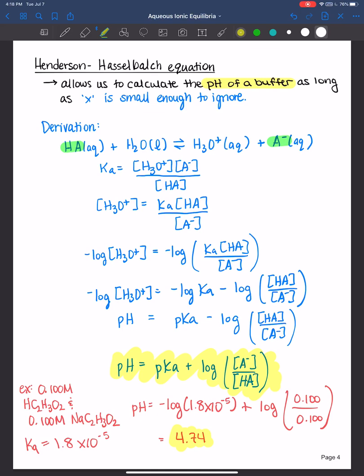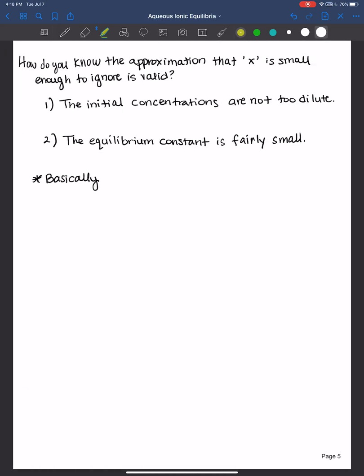I got some tricks for you to kind of quickly identify if that's the case. The initial concentrations must not be too dilute when you're making this buffer or any system when you're trying to decide if X is small enough to ignore. So initial concentrations need to be more concentrated, something along that order. Usually, as you saw, we're making buffers in 0.1 molar concentrations or 1 molar concentrations. So typically not an issue there.